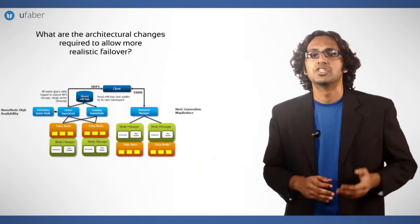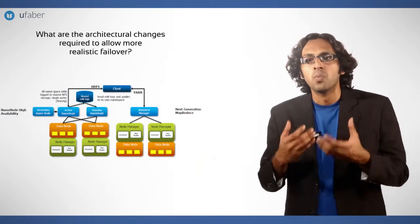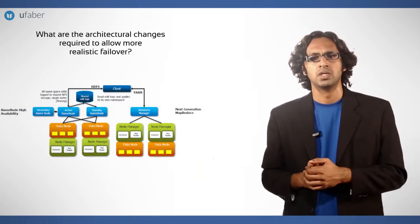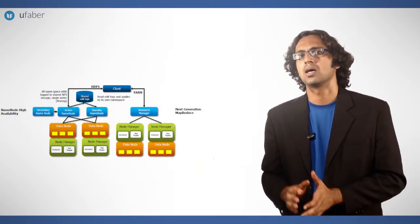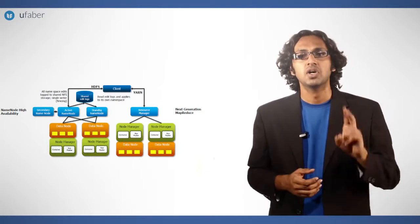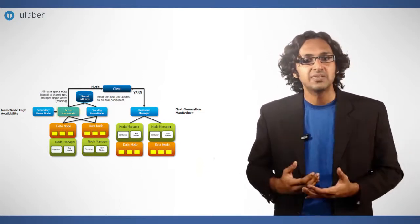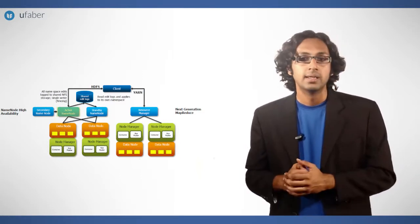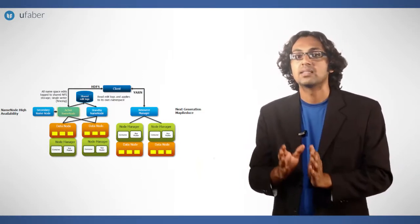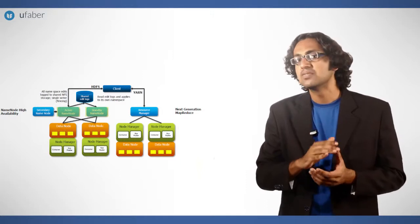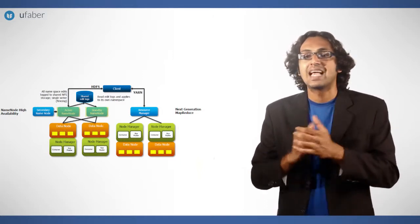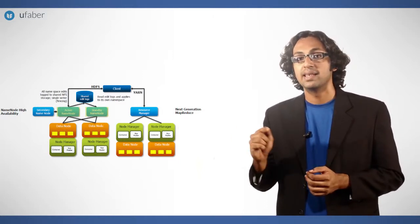What are the architectural changes required to allow more realistic failover? Hadoop 2.x allows a Hadoop cluster to have two name nodes. One of them will act as an active name node or ANN and the other will act as passive. The passive name node is known as standby name node or SNN.